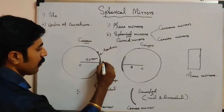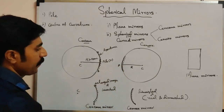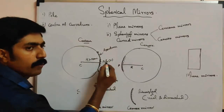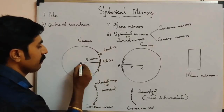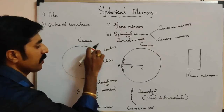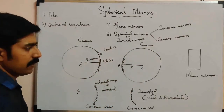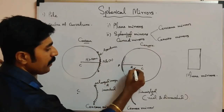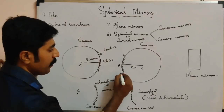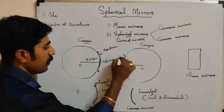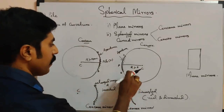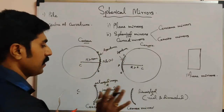A point on the reflecting surface of a mirror is called the pole, denoted by letter P. The aperture is the distance from point A to point B on the reflecting surface — this is the aperture. The radius of curvature should be greater than the aperture of the reflecting surface of the mirror.